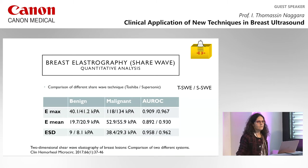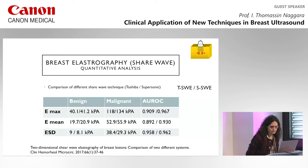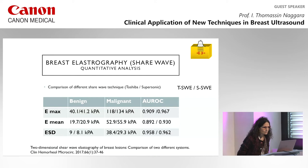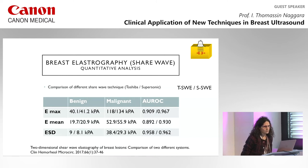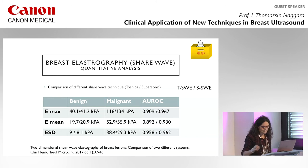Looking at different shear wave techniques in the literature, this paper compares two different systems and shows that performance is quite similar between them. The Emax is probably stronger than the mean value because it is more reproducible. Malignant lesions measure around 50 kPa versus benign lesions at around 20 kPa.